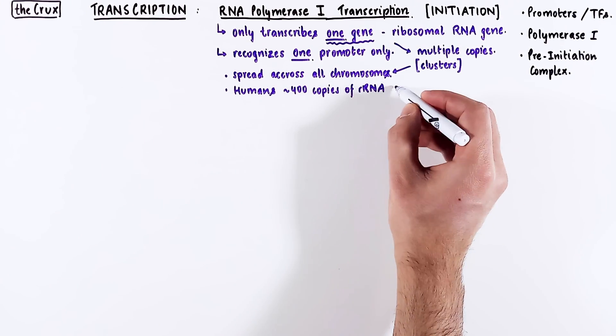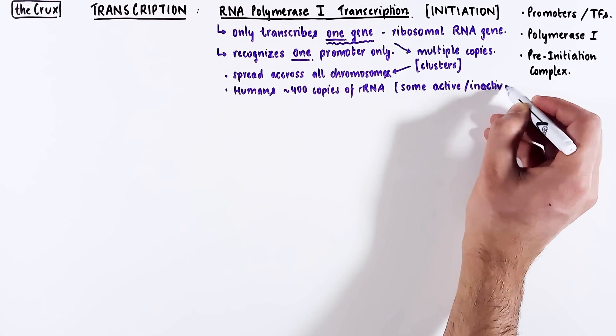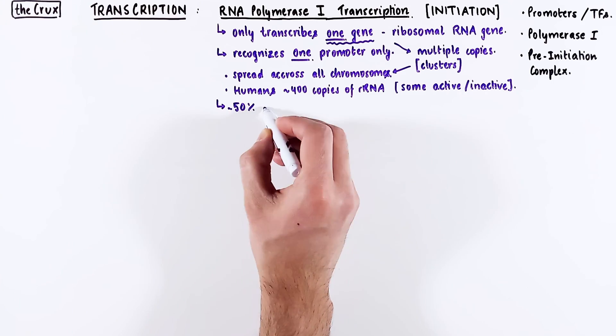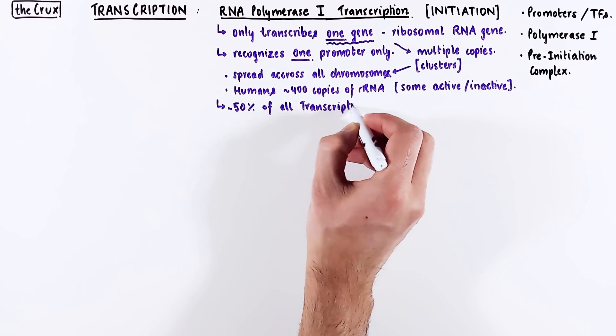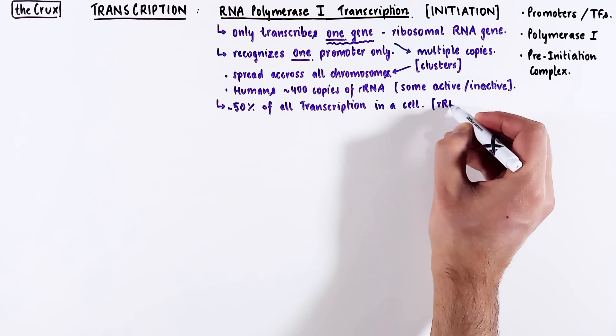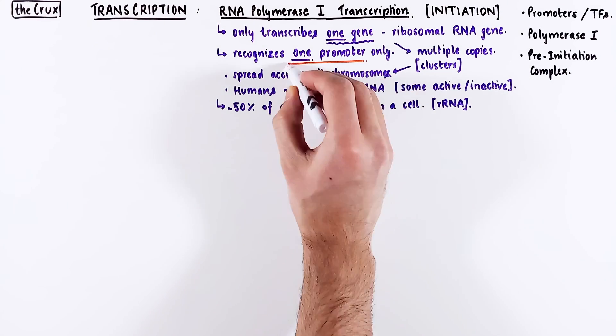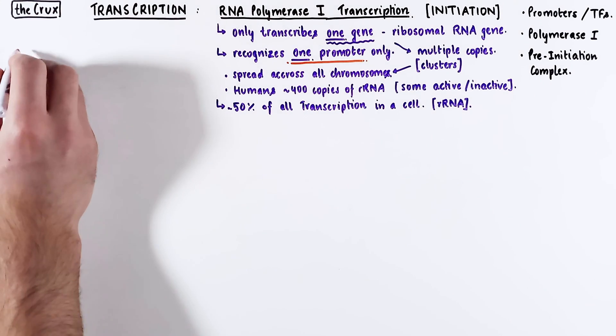Some copies are active and some copies are inactive. But the extraordinary thing here is that almost 50% of all transcription happening in a cell comes from RNA polymerase I transcription, which is the transcription of the ribosomal RNA. Now because there is only one promoter to discuss, let's take a closer look at this promoter.